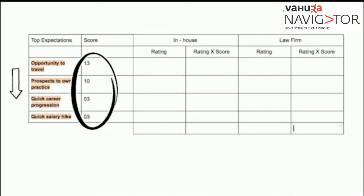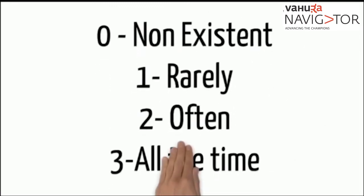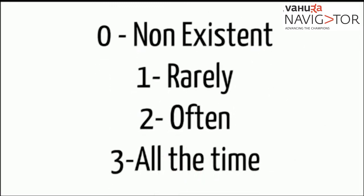The rating scale Reshma can use is 0 to 3, where 0 is non-existent, 1 is rarely, 2 is often, and 3 is for all the time.